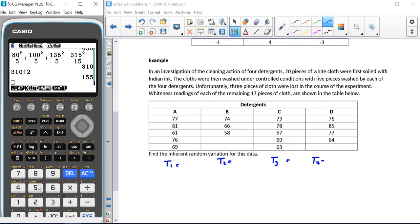So for our first group, we have 77, 81, 61, 76 and 69, which gives us 364.